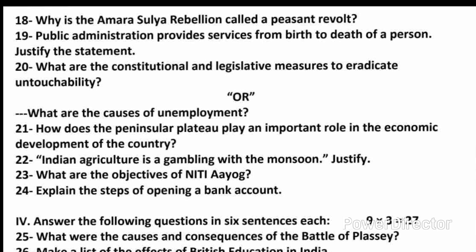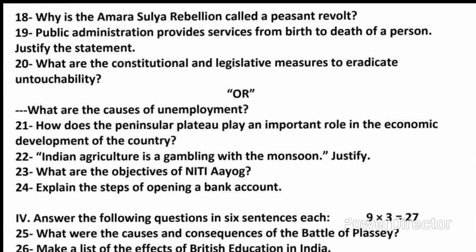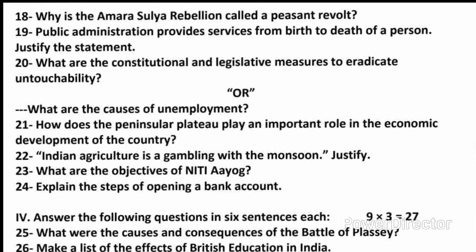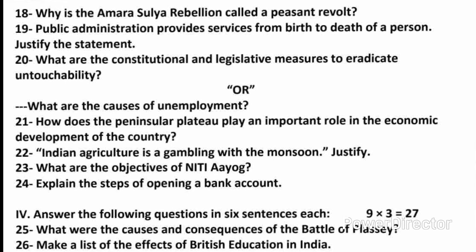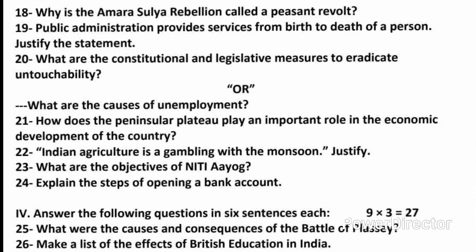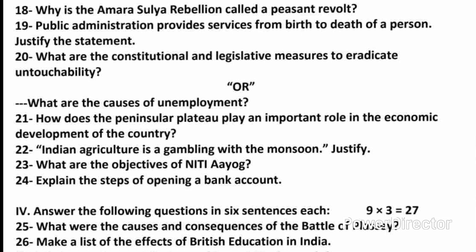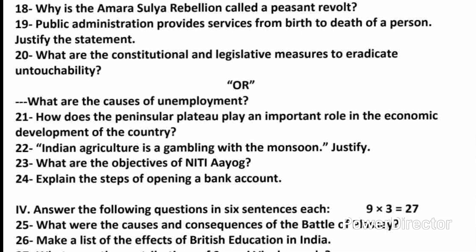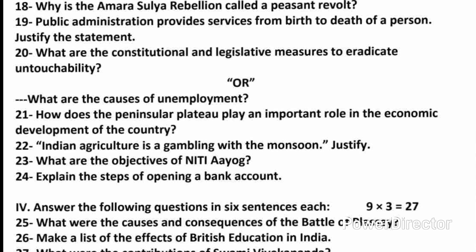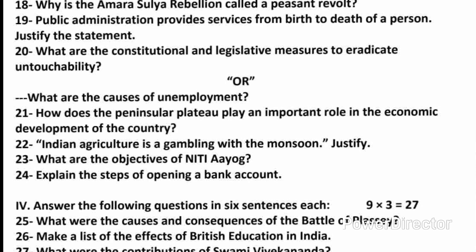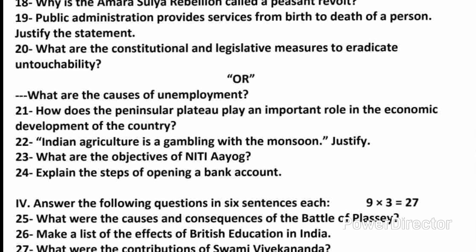Question 19: Public administration provides services from birth to death of a person — Justify the statement. Answer: It maintains civil order and peace by protecting the life and property of citizens. It takes care of providing basic facilities, education, employment opportunities, protects the state, and ensures economic equality. It provides numerous services like this.